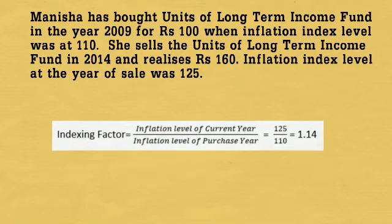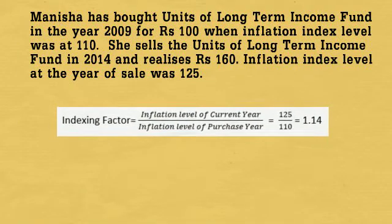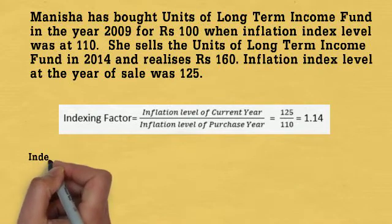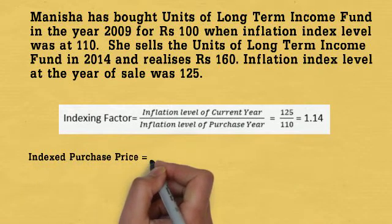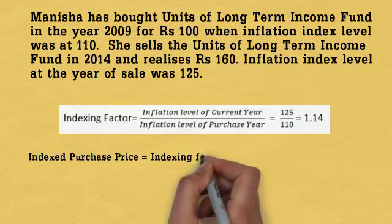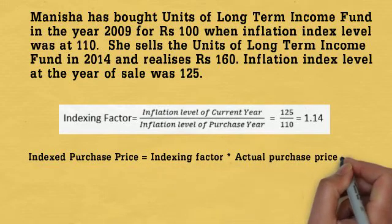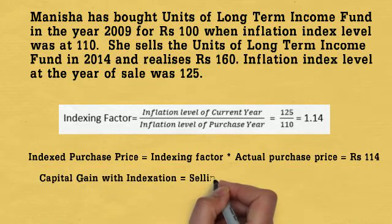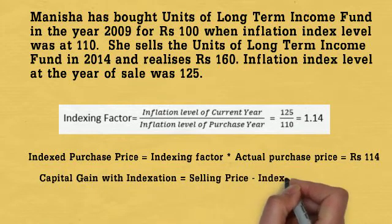The indexing factor is calculated by dividing the inflation level of the current year by the inflation level of the purchase year, which is 125 divided by 110, which comes out to 1.14. The indexed purchase price is calculated by multiplying the actual purchase price with the indexing factor, which is Rs. 114.